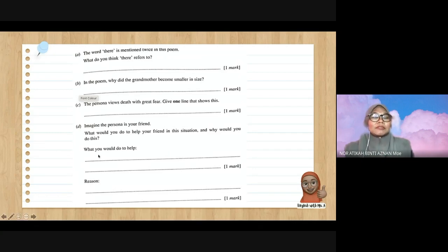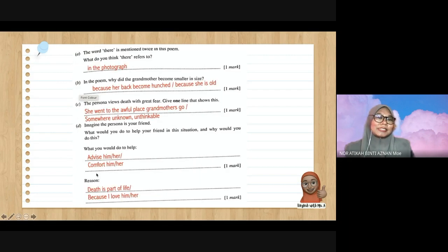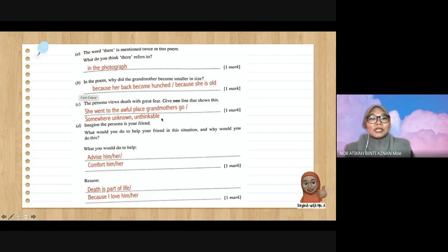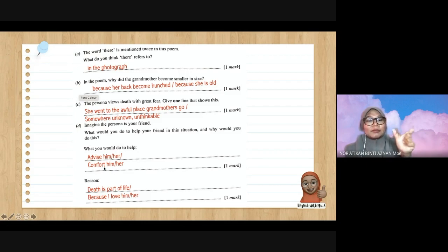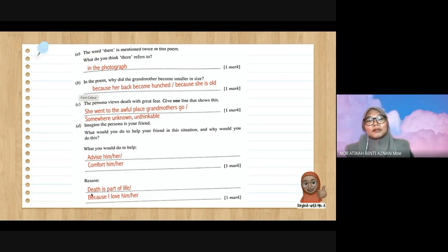The answers: 'there' refers to the photograph. Grandmother became small because she is old, or because her back became hunched. For the one line: 'She went to the awful place grandmother's go' or 'somewhere unknown, unthinkable' — use only one, not both. How to help: advise him/her, or comfort him or her — choose one action verb. Reason: because I love him or her, or because death is part of life — kematian adalah sebahagian daripada kehidupan.